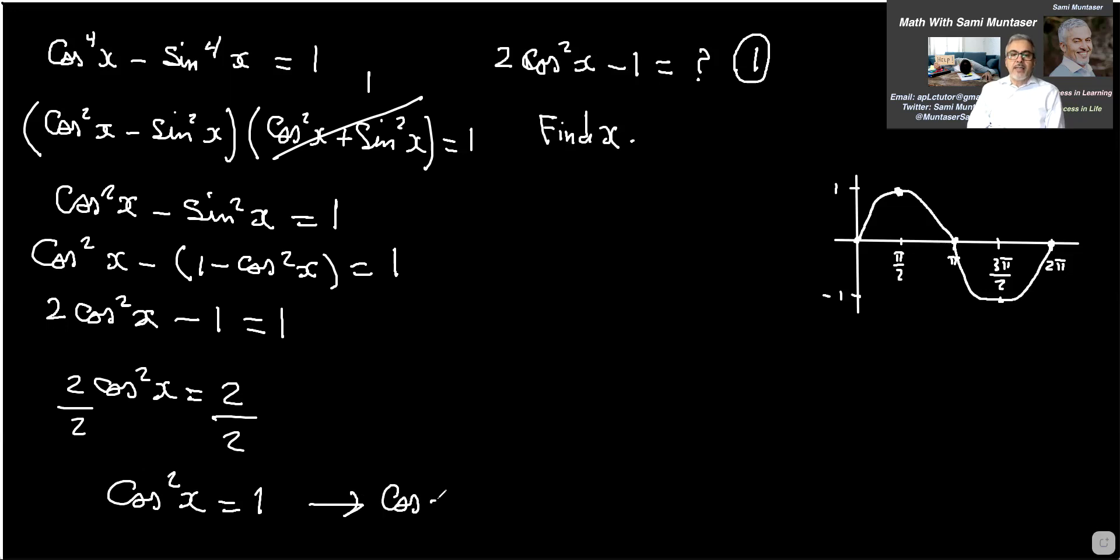And therefore cos x equals plus or minus one. And therefore x is one in here and negative one right there. And that will keep on repeating. So the answer will repeat every pi because between pi over two to three pi over two, there's a pi and this wave will continue. So the answer will repeat every pi.